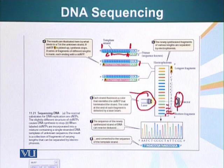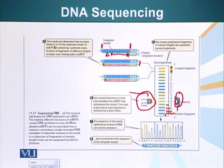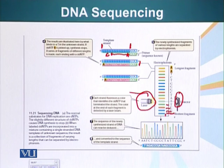Blue was detected again — that was also G. Then red was detected, which was C. Then green, which was T. So sequentially, as we move along, we are determining the sequence of our DNA, which can have very significant consequences. We need to sequence DNA to detect certain disorders and to find different types of changes in DNA. So we can sequence DNA using PCR technology.